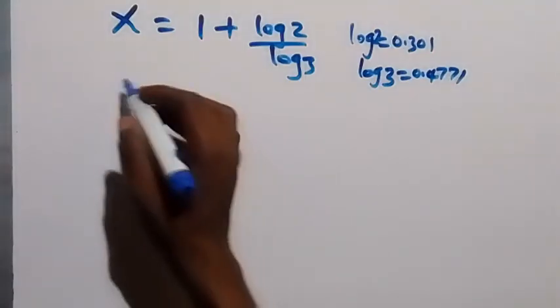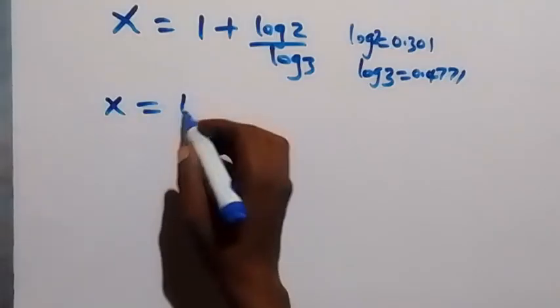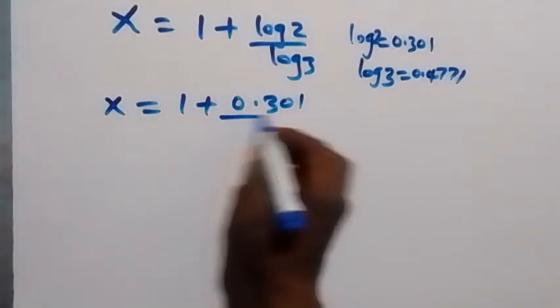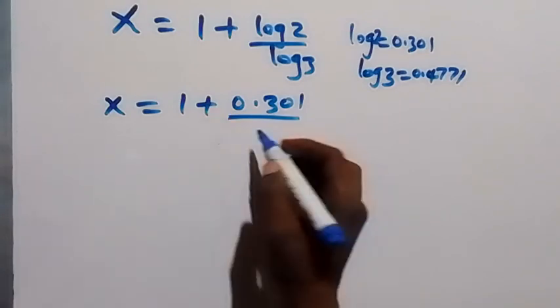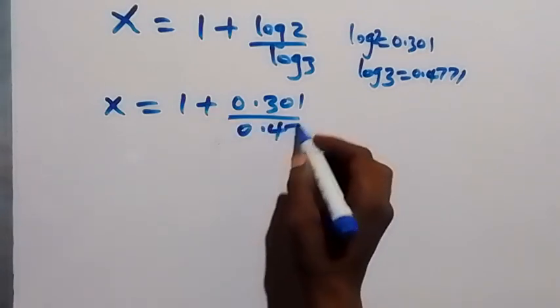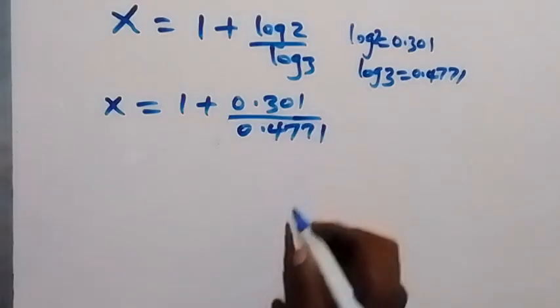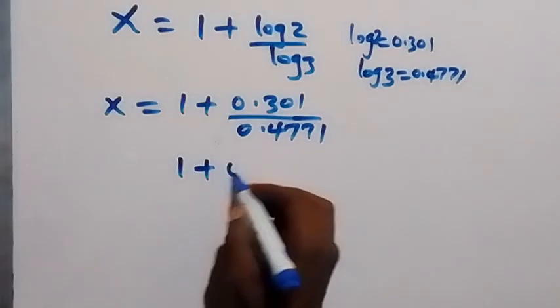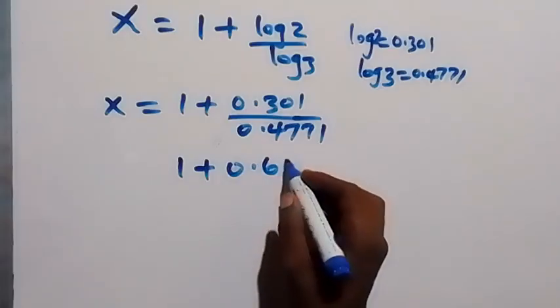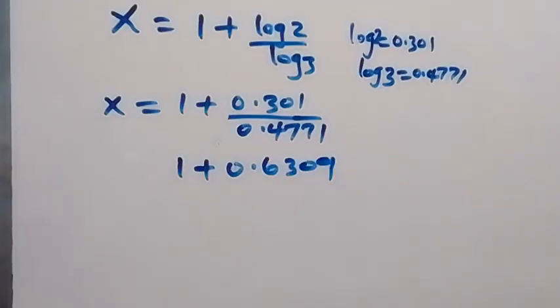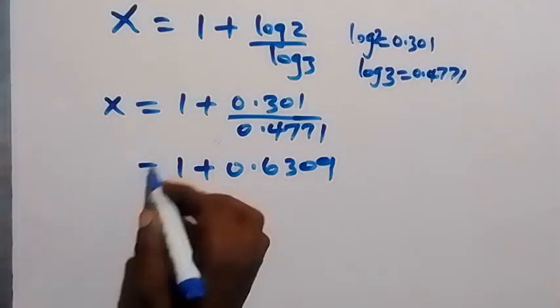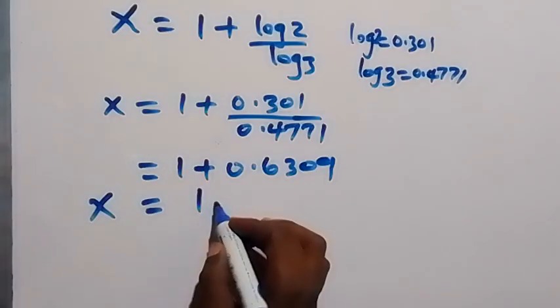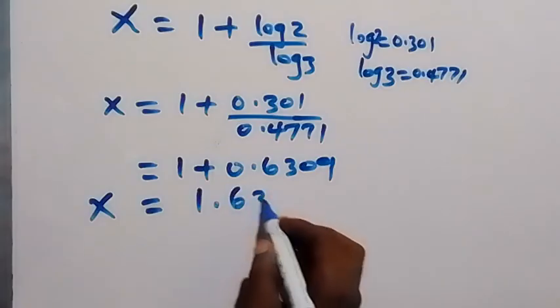Then when you substitute that here, we have x = 1 + 0.301 divided by 0.4771. Then when we divide this, this gives us 1 + 0.6309. And then from here, we have x to be equals to 1.6309.